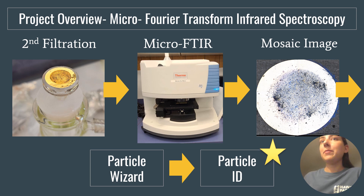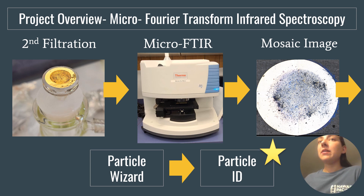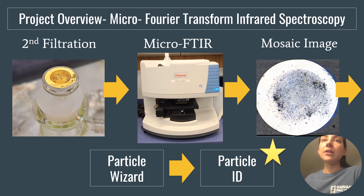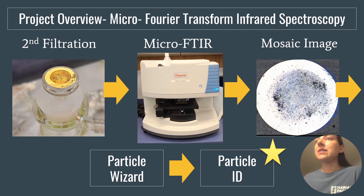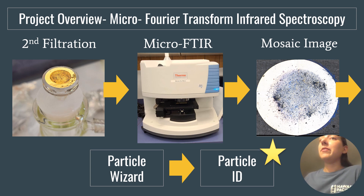The particles from the top chamber of the density separation device — those less dense particles such as plastics, which is what we're most interested in — are going to be filtered onto a gold filter. We're then going to analyze them on the Nicollet IN-10 infrared microscope, where a mosaic image is taken of the filter, which depicts all of the particles, and then a particle wizard is run, which is an application used in the software for this instrument. The particle wizard is where the automation part of this internship comes into place. Once set, the particle wizard will take a single spectrum of each particle on the gold filter, and this could take hours depending on the number of particles on the filter.